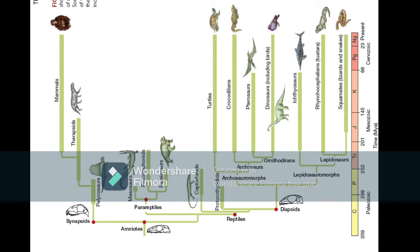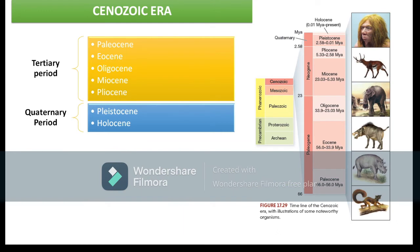The Cenozoic era, the latest era, has two periods: the Tertiary and the Quaternary. We are currently in the Quaternary period, in the Holocene epoch. These periods are further classified into epochs — remember the hierarchy: eons, eras, periods, and epochs. The Tertiary period contains the Paleocene, Eocene, Oligocene, Miocene, and Pliocene epochs.